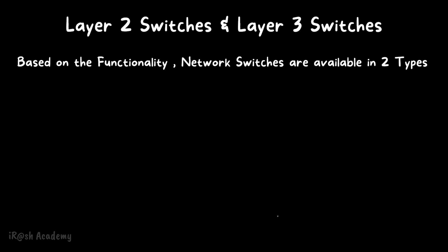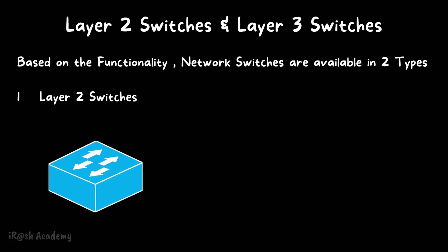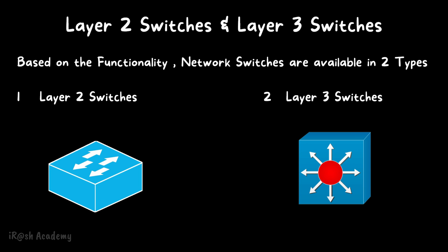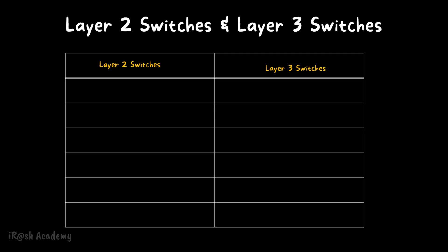Based on the functionality, network switches are available in two types. The first one is layer 2 switches and the second one is layer 3 switches. The symbols of layer 2 and layer 3 switches are shown in the picture. Now let's discuss the differences between layer 2 switches and layer 3 switches.